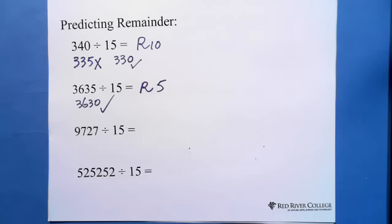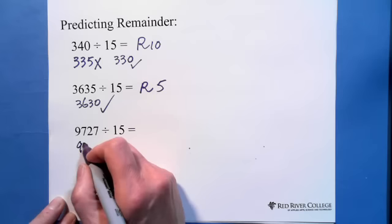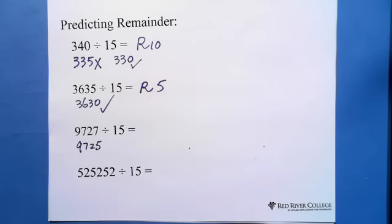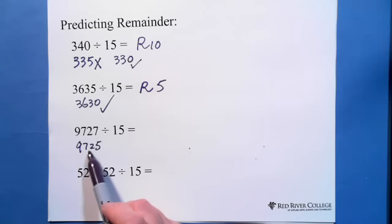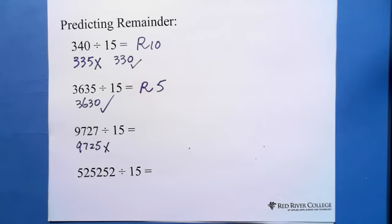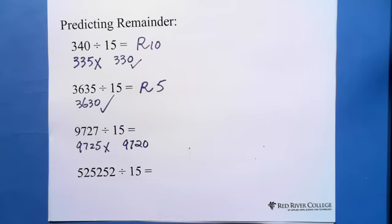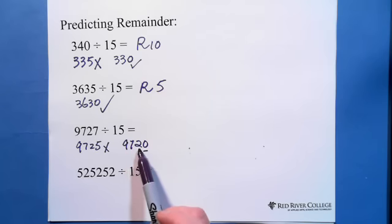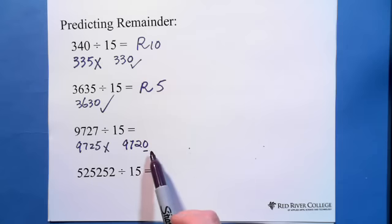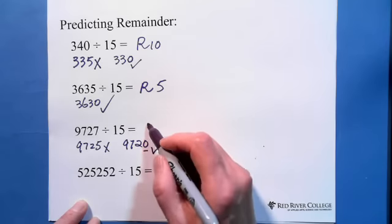Next, we need to find the nearest multiple of 15. First try 9725 — it ends in 5, divided by 5. But 9 plus 7 plus 2 is 18, and the digit 5 is not... so this is not working with 3. We go back to 9720: last digit is 0, divided by 5, and 9 plus 7 plus 2 is 18, which is divisible by 3. So 9720 is divided by 15, and the remainder is 9727 minus 9720, which is 7.